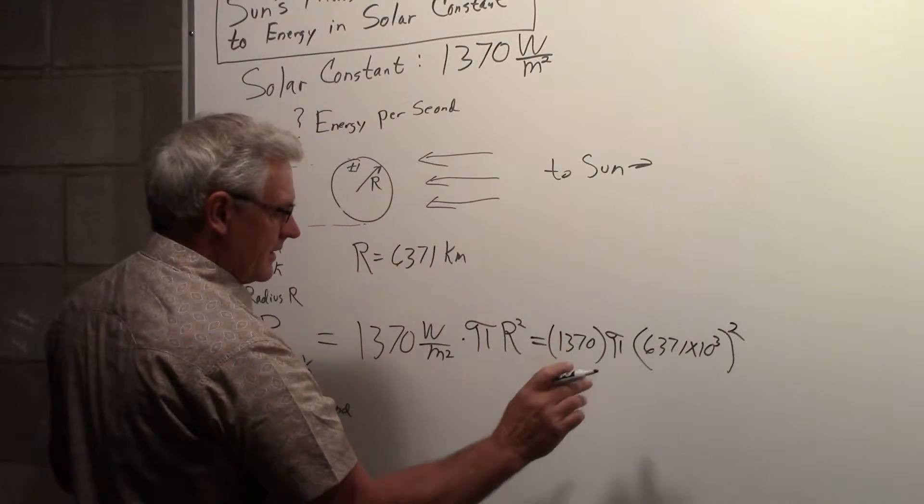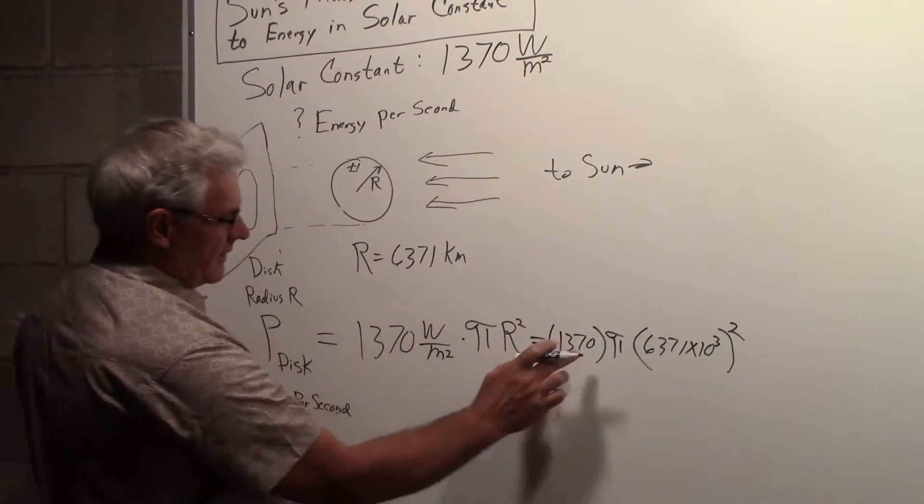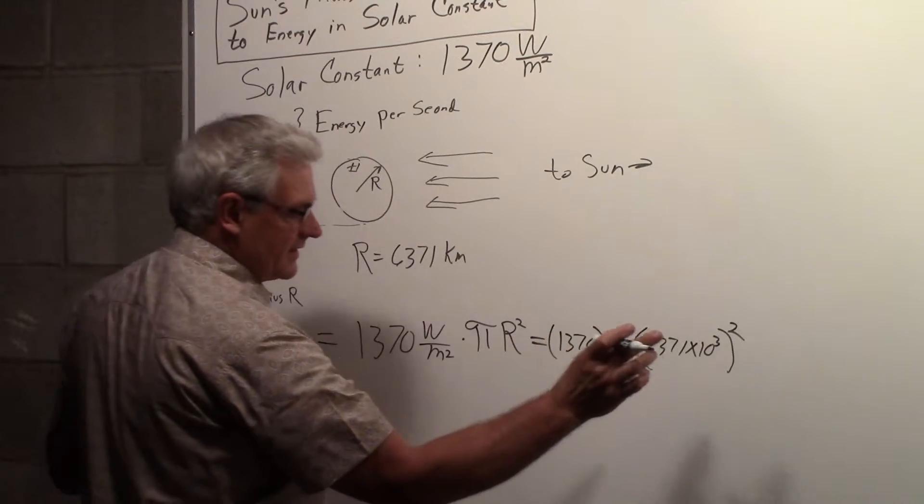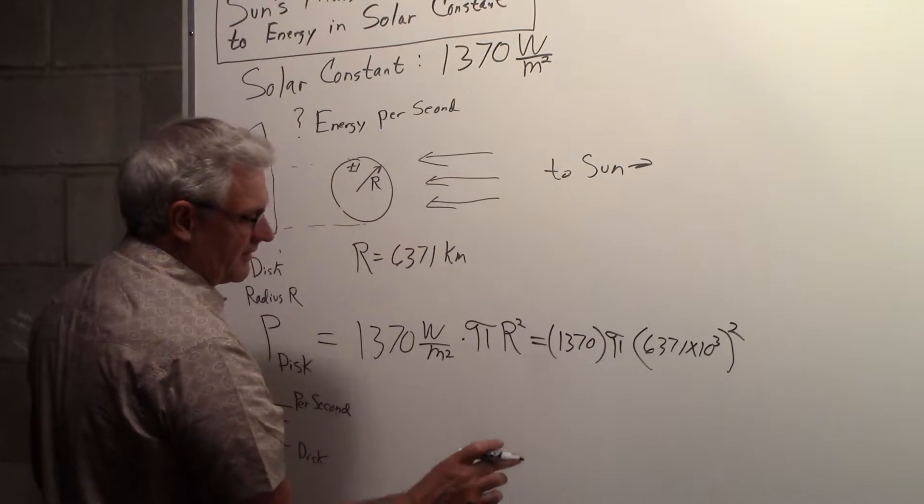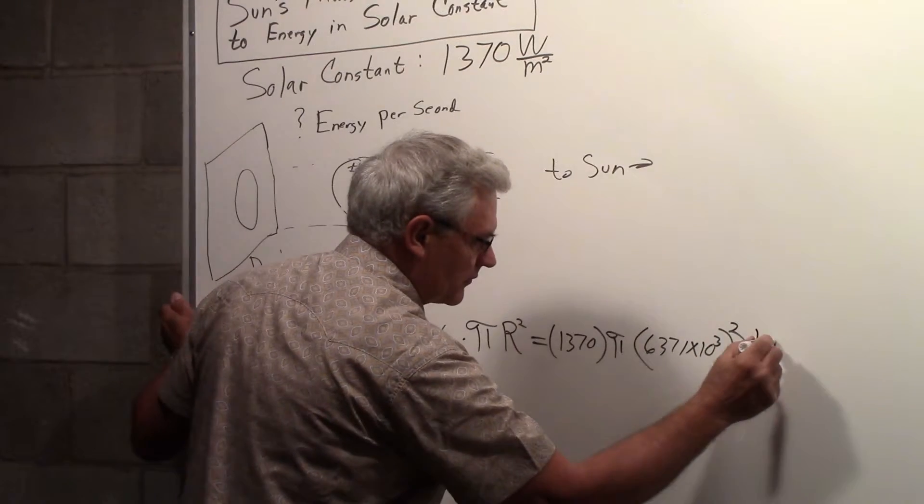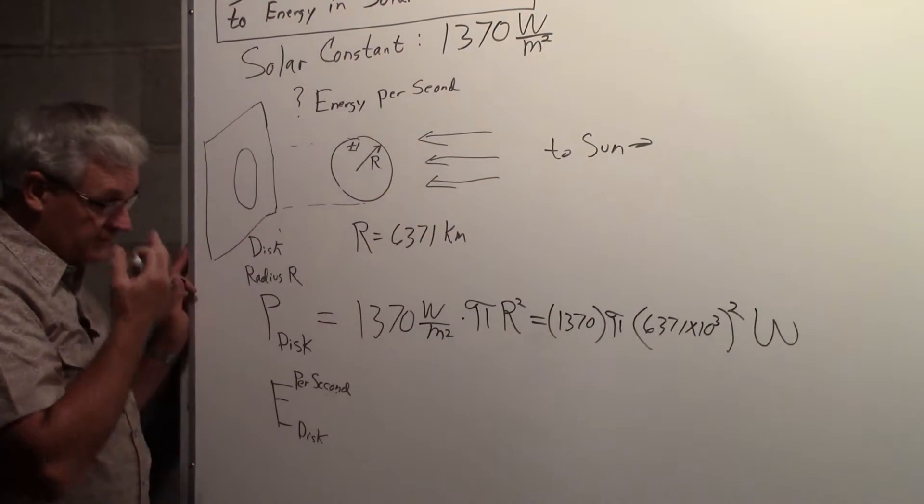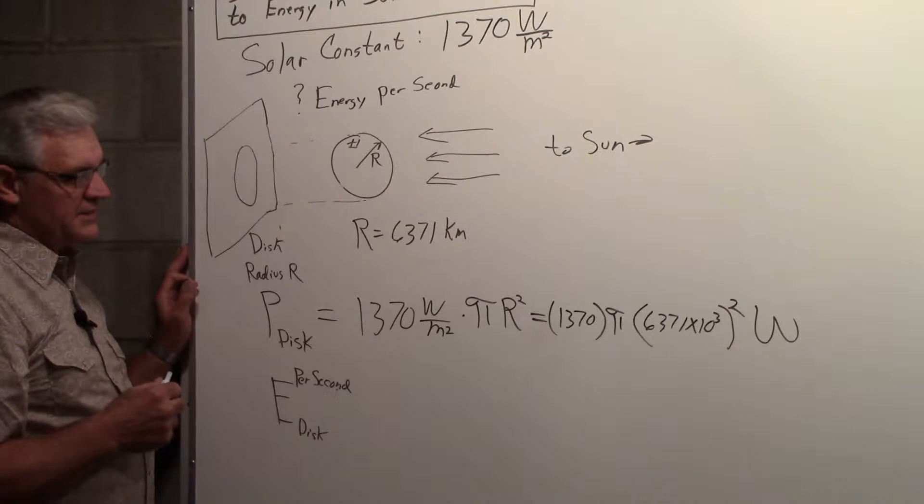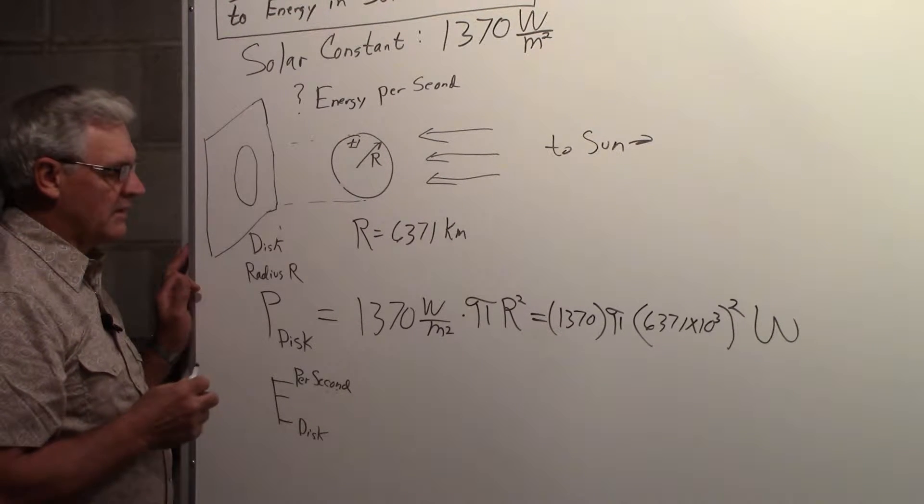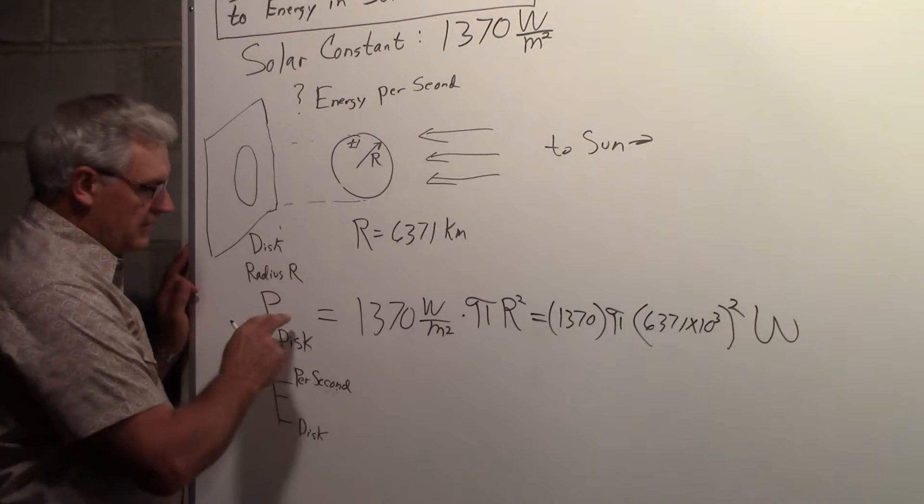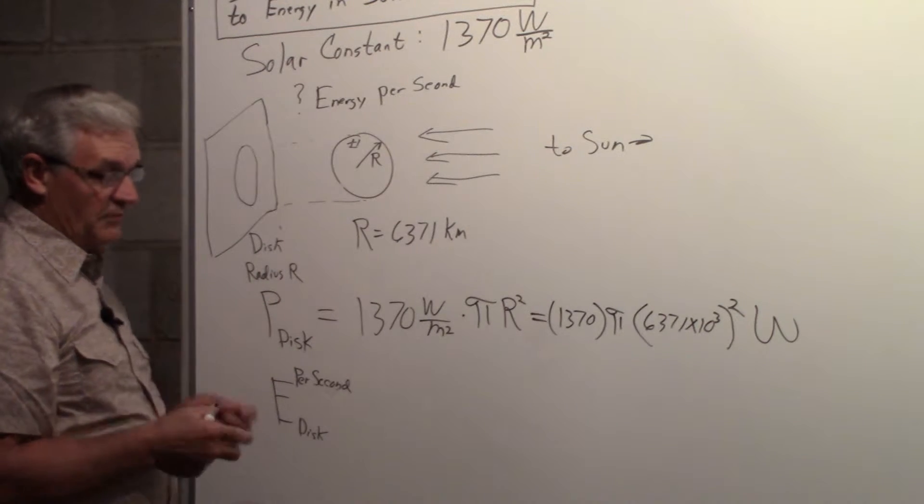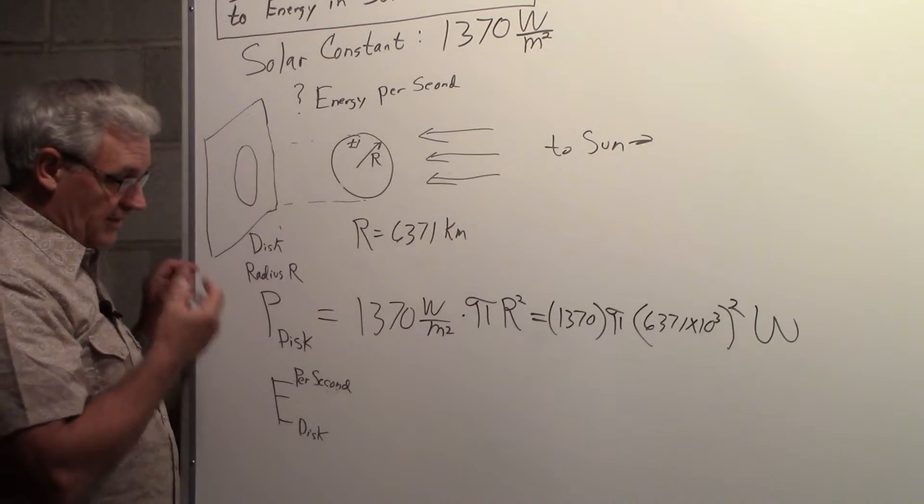So the meter squared in the solar constant and the meter squared from this area of the disk, they cancel, so we're just left with watts here. That's the total amount of power that is falling on the disk. It's the total amount of power intercepted by the Earth.